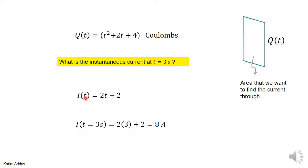And then you substitute the current at the time that they want. So you put 3 seconds, then you put time 3 seconds, you get 2 times 3 plus 2 is 8 amperes.